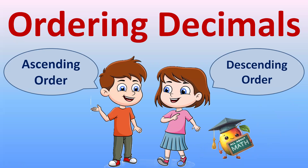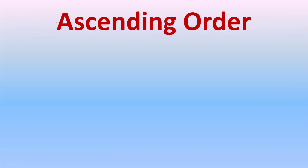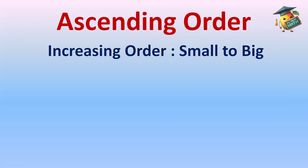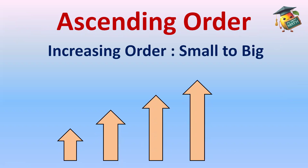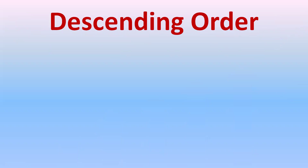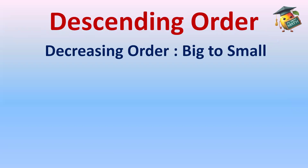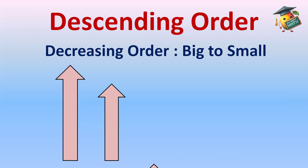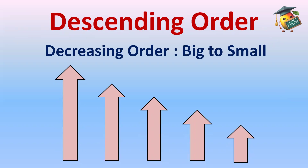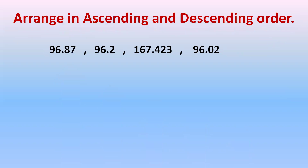Hi everyone! Today we'll learn how to arrange decimals into ascending and descending order. Ascending order means increasing order — that is, small to big. Descending order means decreasing order — that means moving from big to small. Now we have some decimal numbers here to arrange in ascending and descending order.